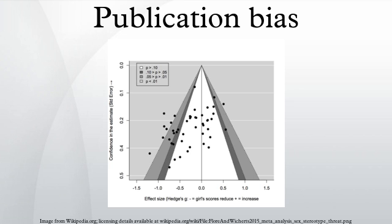Additionally, a number of publication bias methods have been developed, including selection models and methods based on the funnel plot, such as Begg's test, Egger's test, and the trim-and-fill method. However, since all publication bias methods are characterized by a relatively low power and are based on strong and unverifiable assumptions, their use does not guarantee the validity of conclusions from a meta-analysis.